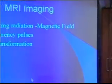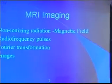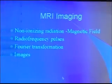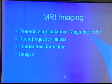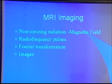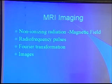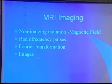MRI, magnetic resonance imaging, is basically a unique device. We use non-ionizing radiation or magnetic fields. We use radio frequency pulses such as radio wave pulses and a complicated Fourier transform to create the images.